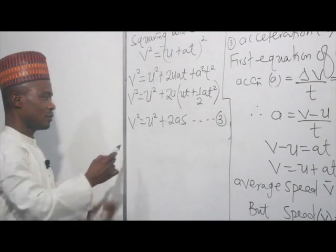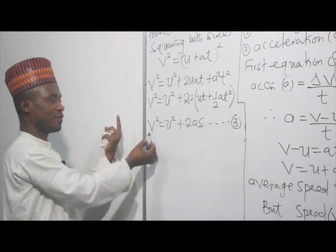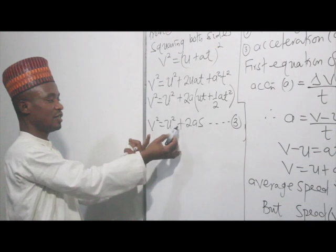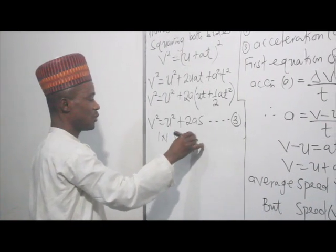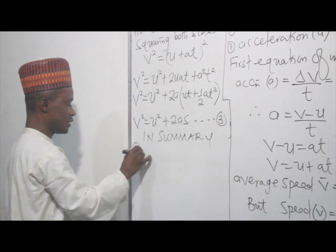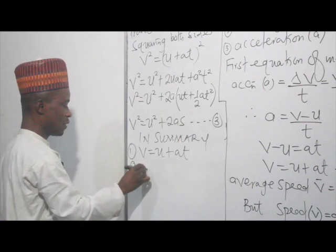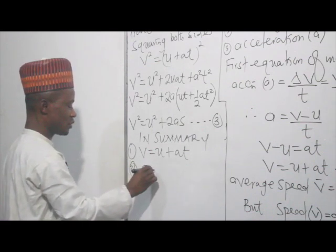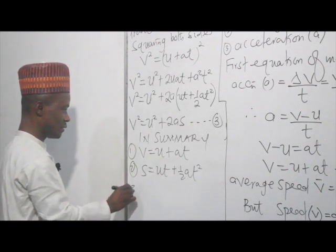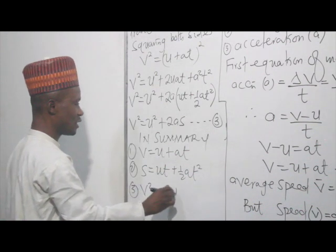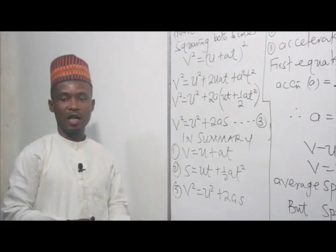In summary, the three equations of motion are: first, v = u + at; second, s = ut + ½at²; third, v² = u² + 2as. With these three equations, we can solve problems that have to do with motion.